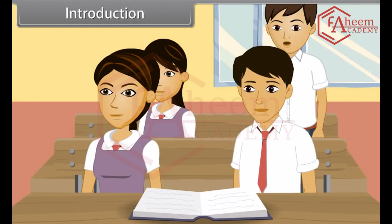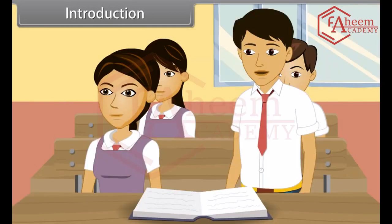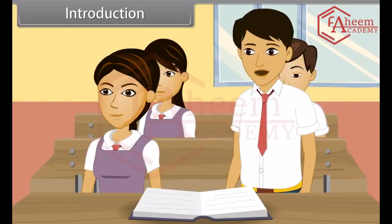Teacher, what is the periodic table? The periodic table is the arrangement of elements in such a way that similar elements fall in a group, whereas dissimilar elements are separated. So we will classify the elements on the basis of their properties? Well said. Thank you, teacher.